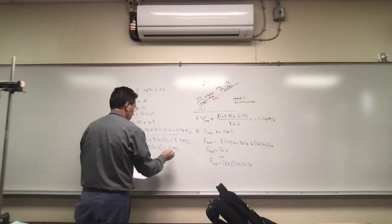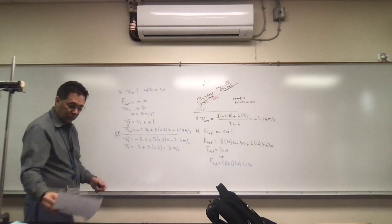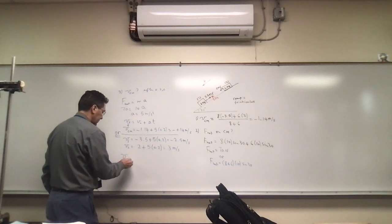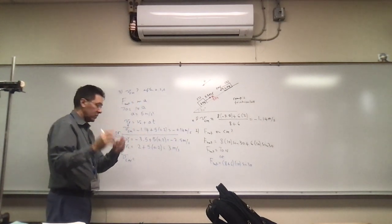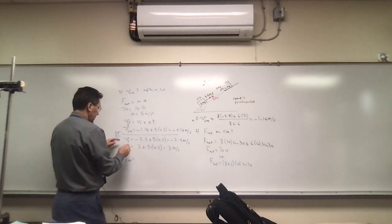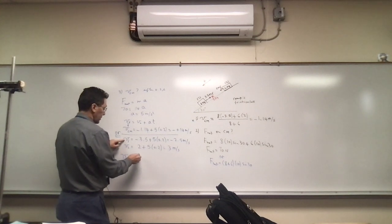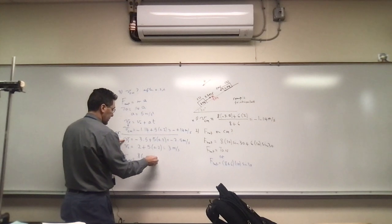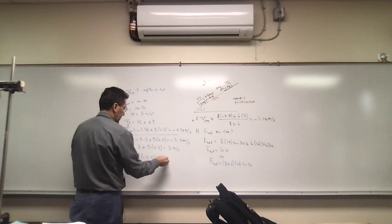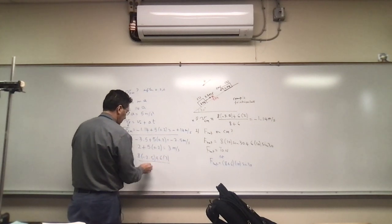Now I'm going to find the velocity of the center of mass using this kind of weighted average. So that's going to be the mass of object 1 times its velocity plus the mass of object 2 times its velocity, divided by the sum of the masses.